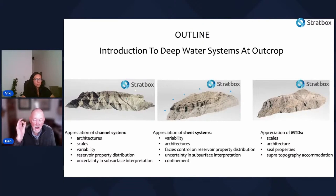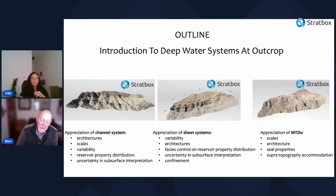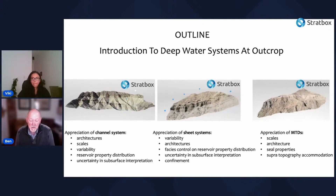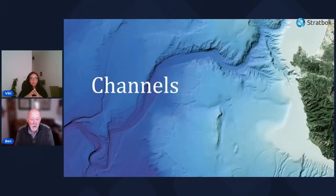We're going to talk about the depositional architecture of ancient deep water systems seen at outcrop as potential analogs for the subsurface. The problem is that deep water systems are highly variable and each system is really only an analog for itself, meaning we have to look at as many systems as possible to create a range of generic models. We'll show examples from a range of different systems, differentiating the three main elements: channels, sheets, and mass transport deposits.